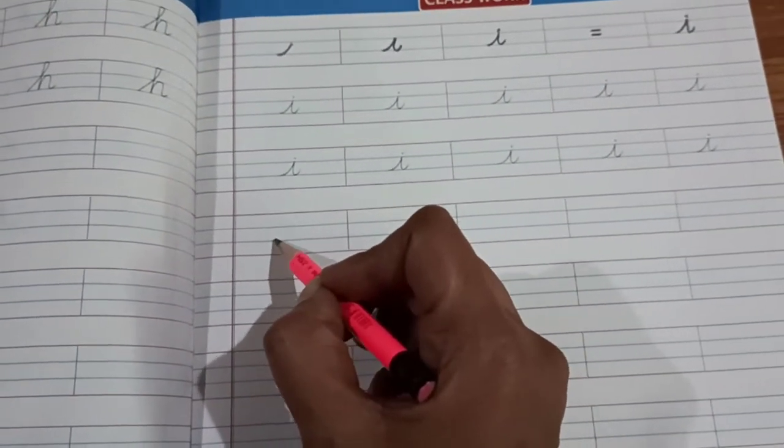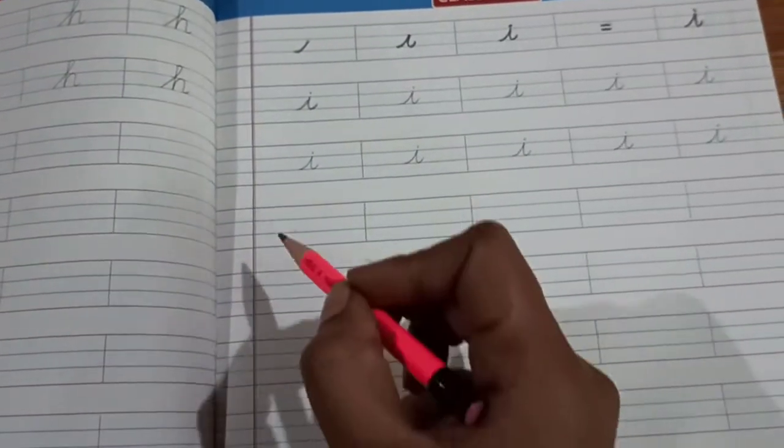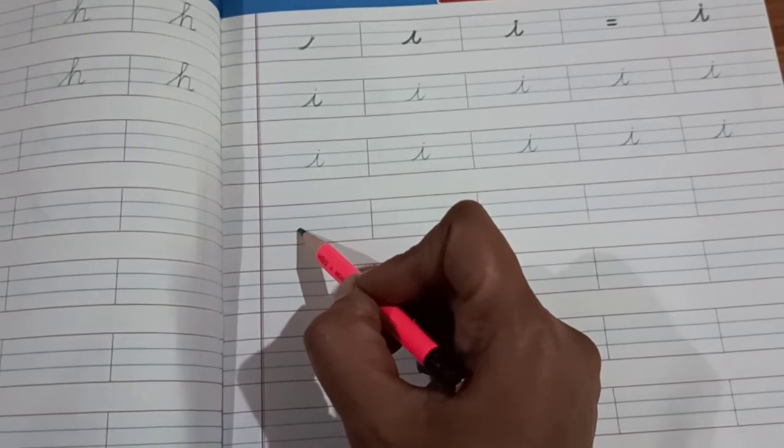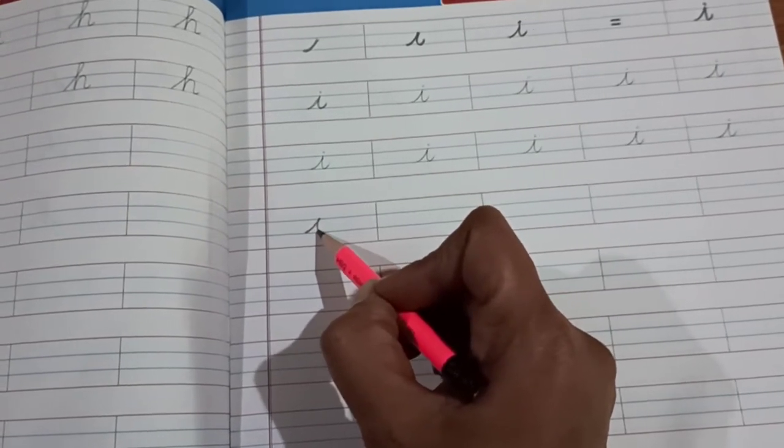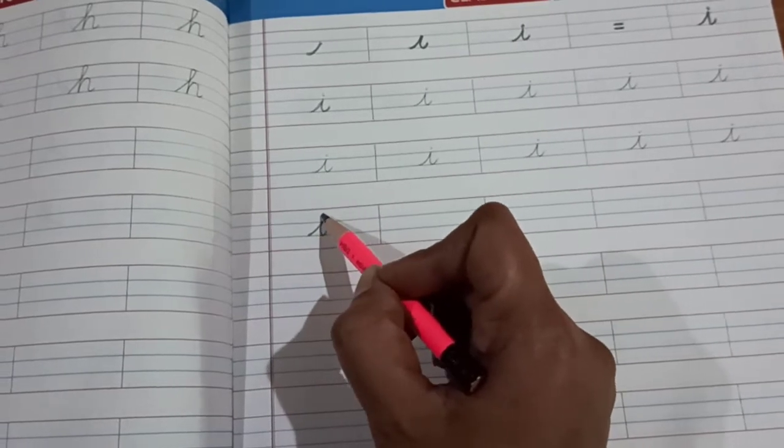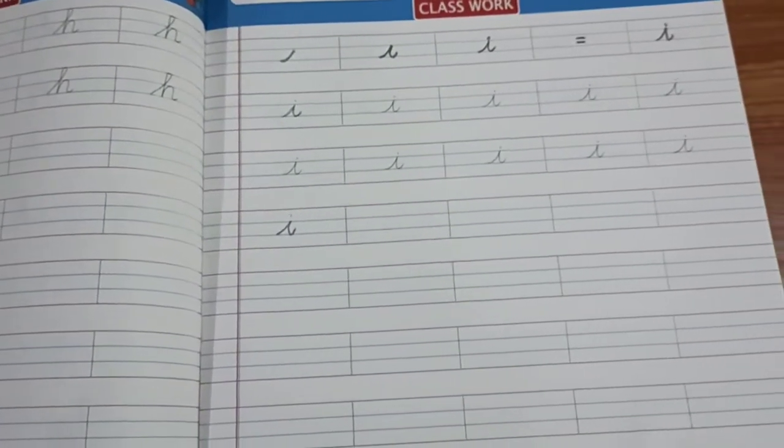Next, trace this dotted line. Here slanting, straight line and small curve towards right side. This is the letter I.